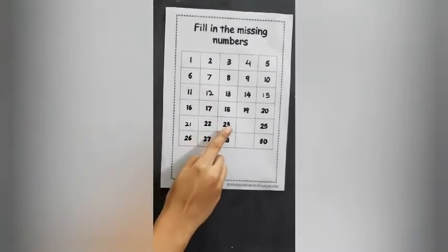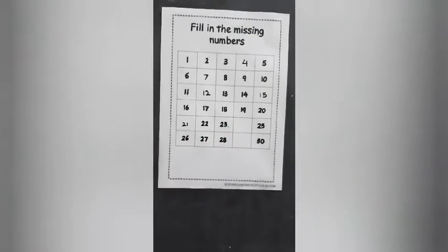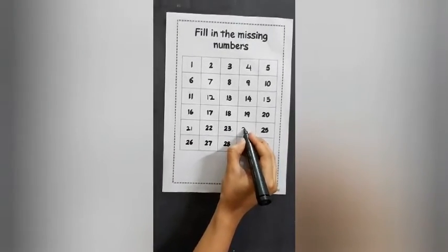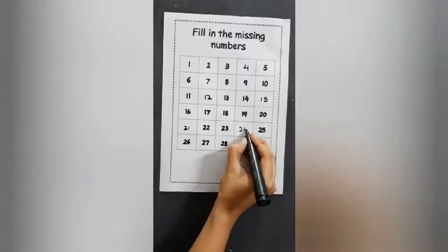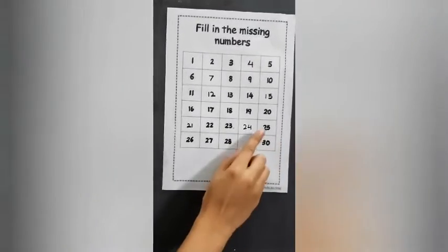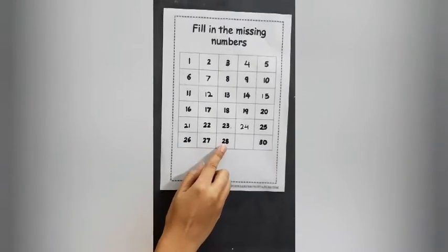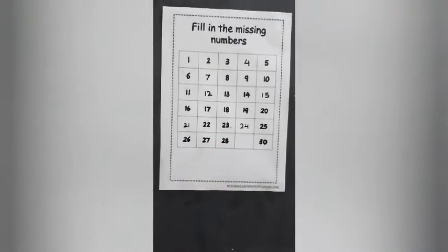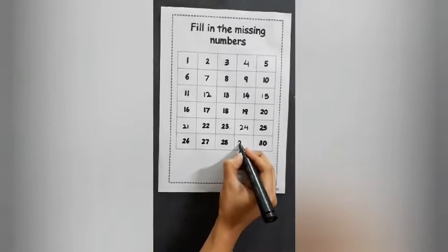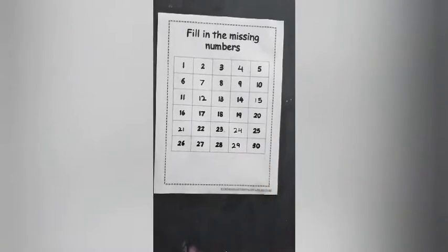22, 23. Yes, the next missing number is 24. 25, 26, 27, 28. What number comes after 28? 29. The missing number is 29.